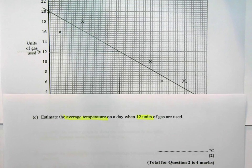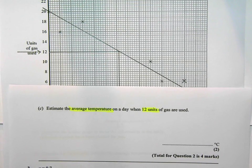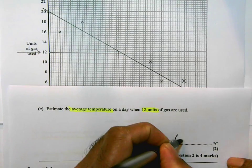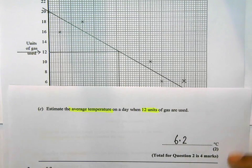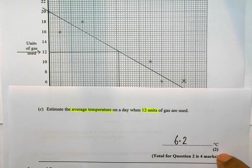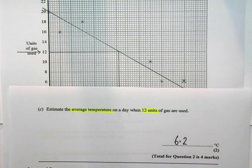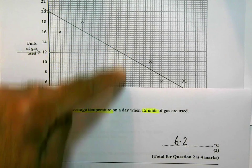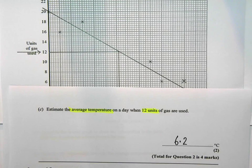That is what I'm going to write in the answer space for part C. Where they want me to estimate the average temperature on a day when 12 units of gas are used, I'm going to write 6.2 over here. And I've checked the mark scheme, and the mark scheme accepts anything from 5 to 7. So anything between 5 and 7, you'll actually pick up the mark. The two marks there, you need to make sure you draw a line of best fit. You need to make sure you draw the guidelines going across from 12 and downwards, and then read off the point correctly.